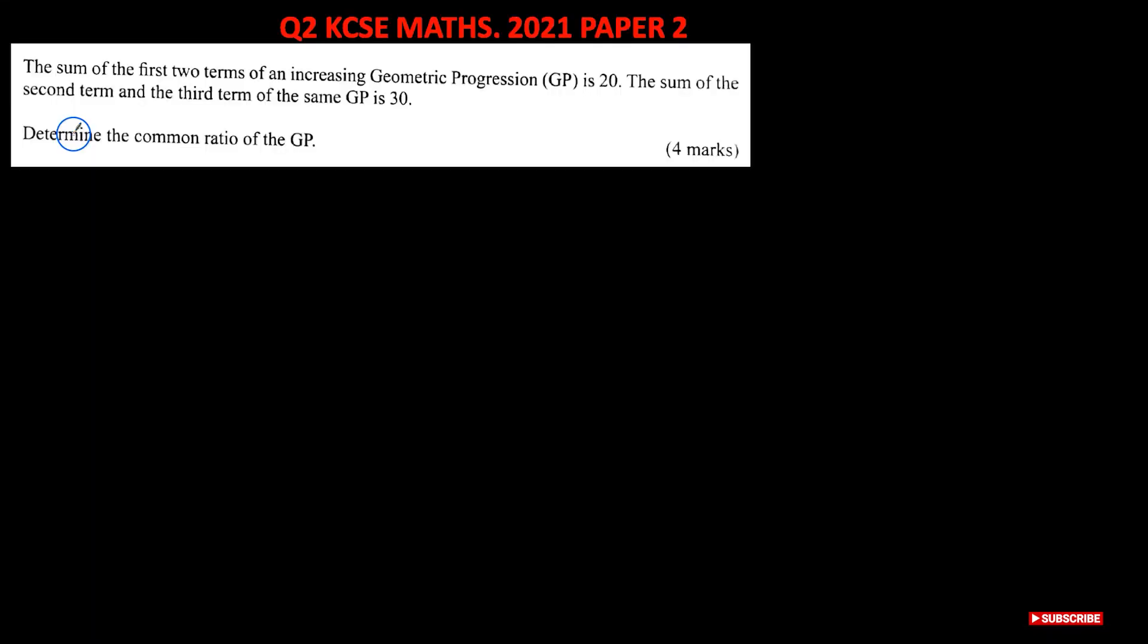For an increasing geometric progression, without delay, let's start the session. Here is the question. We're told the sum of the first two terms of an increasing geometric progression is 20.